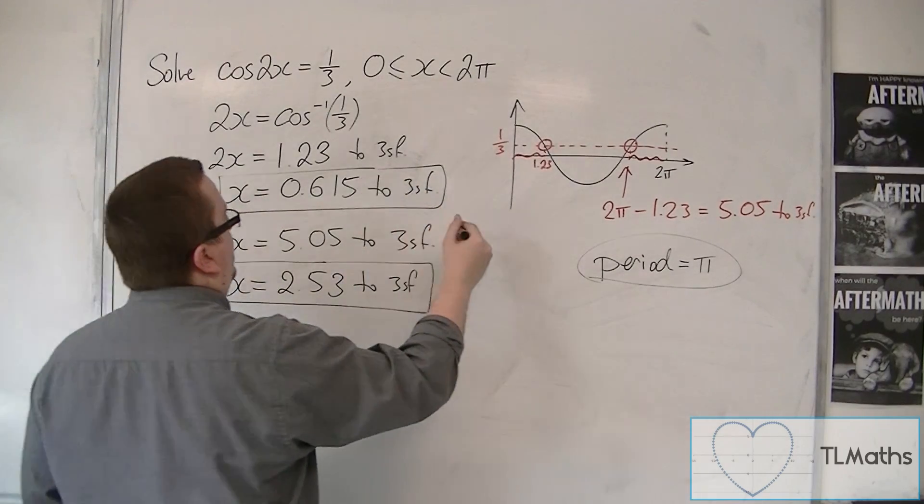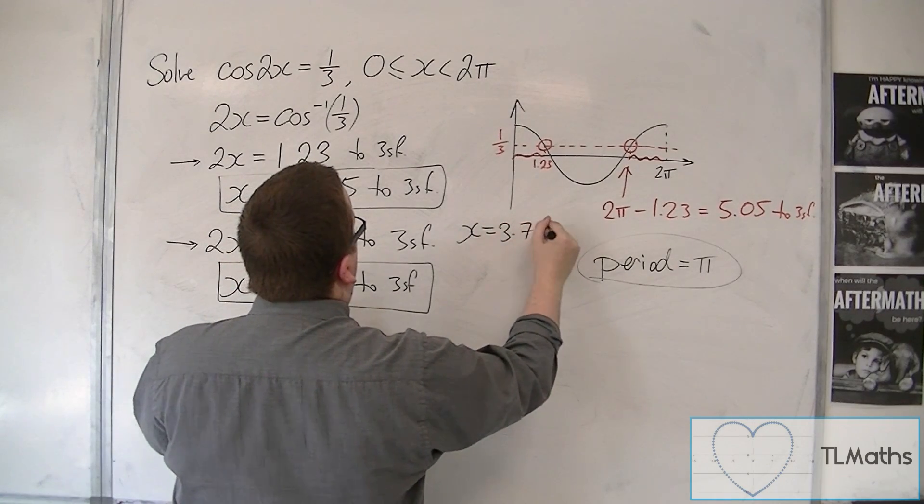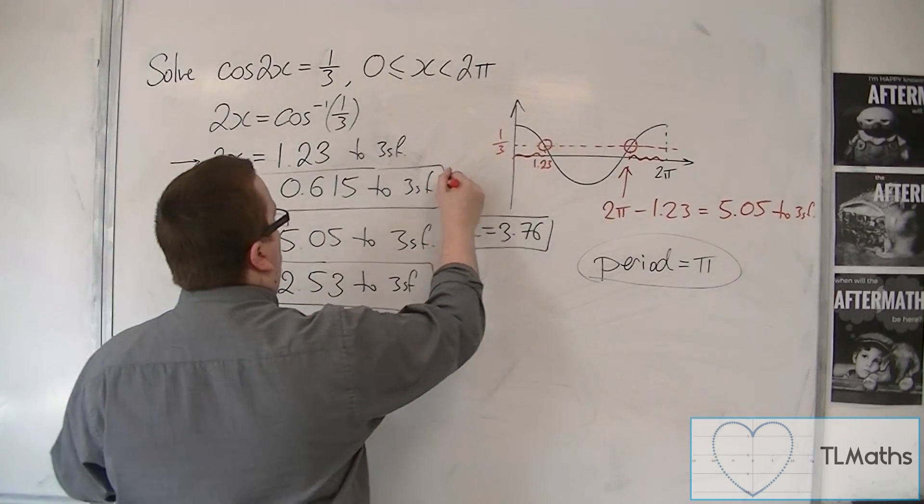So if I add pi onto this one, I get x is equal to 3.76 to 3 significant figures. So that's by adding on pi.